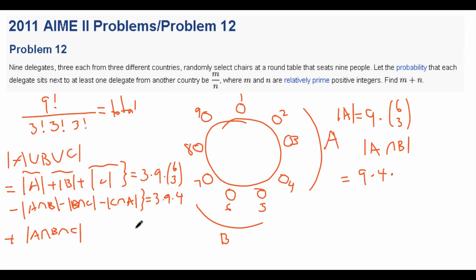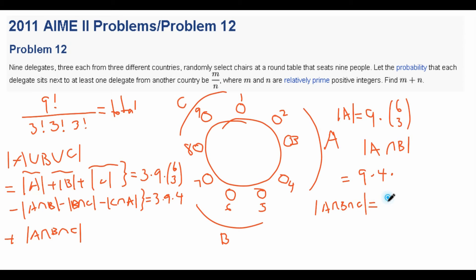Finally, for |A∩B∩C| — all three countries sitting in consecutive blocks — we place A in nine positions. Then B and C can each be either to the right or left of A, giving two arrangements. So |A∩B∩C| = 9 × 2.